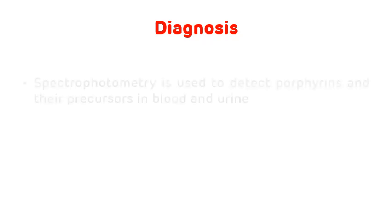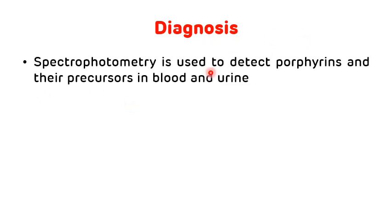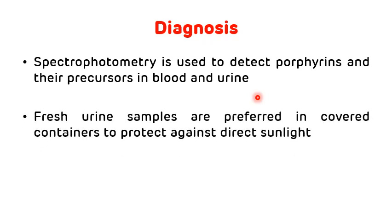For diagnosis, the main investigation in porphyria patients is spectrophotometry. If the patient presents with photosensitivity, you check the plasma level of porphyrins. If the patient presents with neurovisceral manifestations, you check a spot urine sample for the presence of ALA and PBG. A fresh urine sample is required for diagnosis, and the container should be covered properly to protect against direct sunlight.